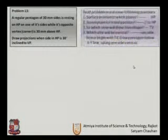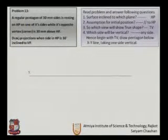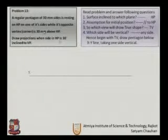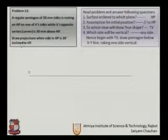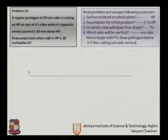We have one more problem: a regular pentagon of 30 mm side resting on the HP on one of its sides, while its opposite vertex is 30 mm above the HP. That side is resting on the HP. Draw the projection when the side in the HP is 30 degrees inclined to the VP. The surface is inclined to the HP, so the assumption for the initial position is parallel to the HP. We begin with the true shape in the top view, with any vertical side but opposite to the vertex.